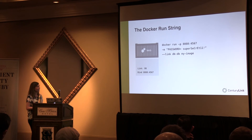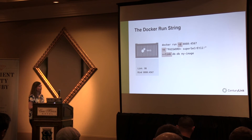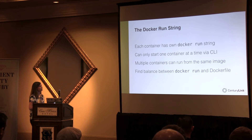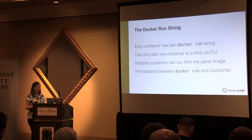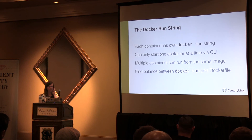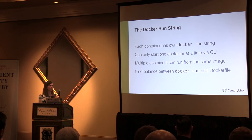The runtime run string includes port mapping, environment variables, and the link. Links take the format name:alias — in this case, I'm aliasing my service called db to db, and then the image is at the very end. Each container has to be run with its own Docker run string, and you can only start one container at a time via the CLI, but you can start multiple containers from the same image — a one-to-many ratio between images and containers. Find the balance between Docker run configuration at runtime versus the Dockerfile.